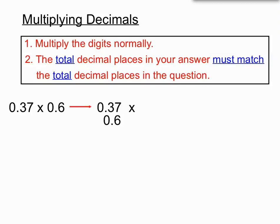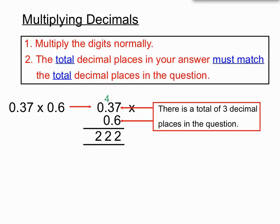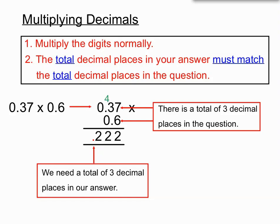Now: 0.37 times 0.6. Multiplying the digits normally — 6 times 7 is 42, write the 2 and carry the 4; 6 times 3 is 18, plus 4 makes 22. So the digits are 222. There's a total of three decimal places in the question — two in 0.37 and one in 0.6 — so we place the decimal point so there are three digits after it in our answer, giving 0.222. We add a zero in front to show it's a decimal.